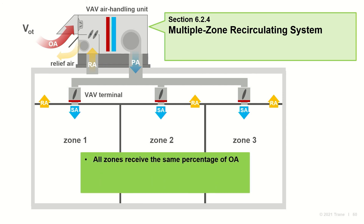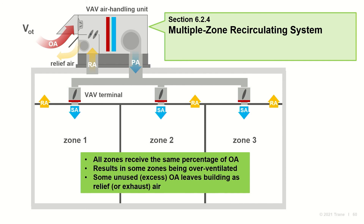Every zone receives the same fraction of outdoor air. As a result, when the critical zone — the zone requiring the highest percentage of outdoor air — is properly ventilated, the other zones will be overventilated. The air returning from these non-critical zones contains some unused or excess outdoor air. Most of this recirculates, and Standard 62 gives credit for it. But some leaves the building as exhaust or relief air without using its full diluting potential.